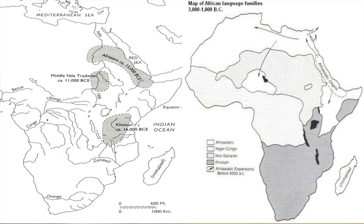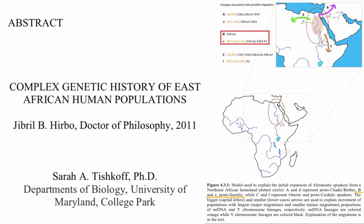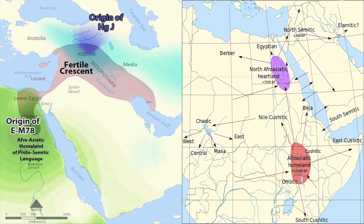Basically, haplogroup E likely has its origin near the Red Sea, spreading on both sides, and Afro-Asiatics have the exact same type of route and origin. A study called 'Complex Genetic History of East African Human Populations' indicates haplogroup E as the haplogroup of proto-Semitic populations originating in the Eastern Sahara, Nile Valley, or near the Red Sea. Another source, 'Haplogroup E1b1b Y-DNA' by Eupedia, confirms that E1b1b lineages are closely linked to the diffusion of Afro-Asiatic languages, originating in the Paleolithic Red Sea region.